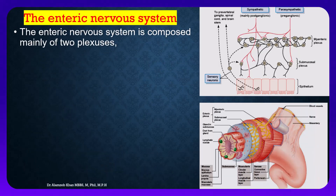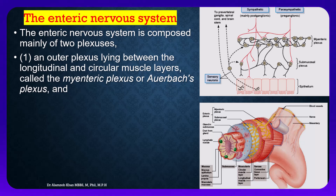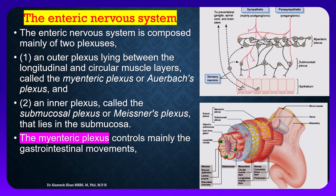The enteric nervous system is composed mainly of two plexuses. The first is an outer plexus lying between the longitudinal and circular muscle layers, called the myenteric plexus or Auerbach's plexus. The second is an inner plexus called the submucosal plexus or Meissner's plexus, which lies in the submucosa.